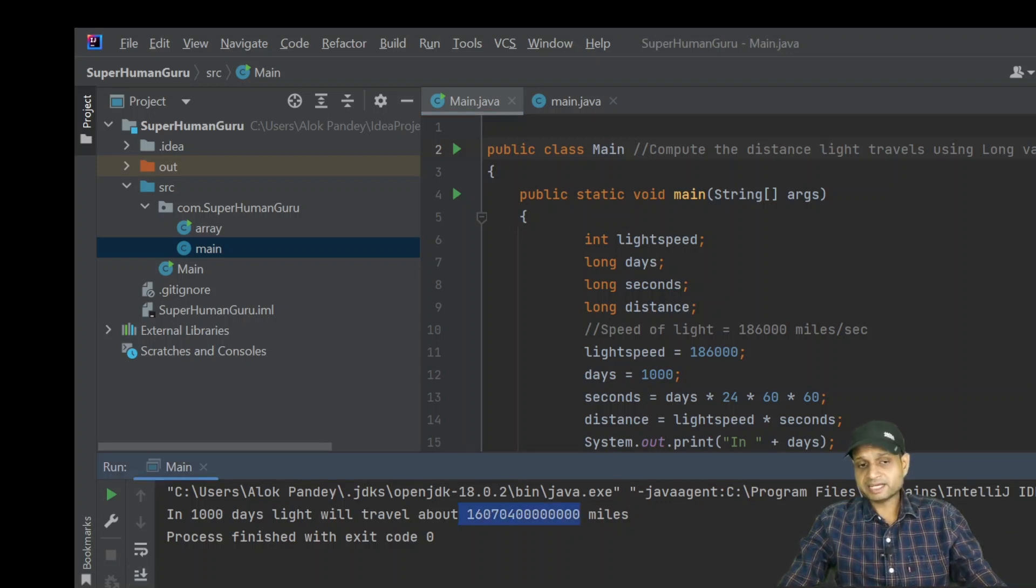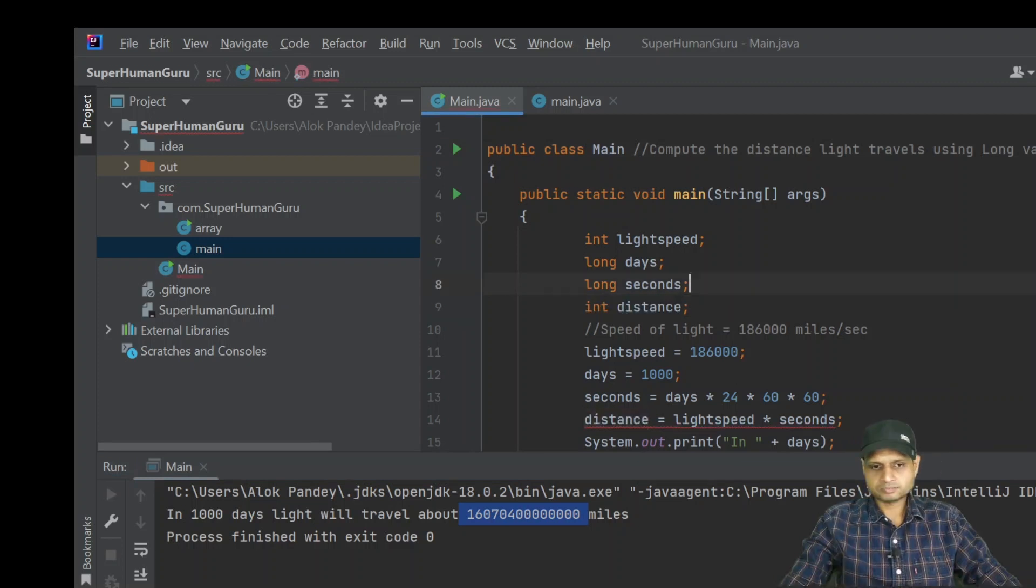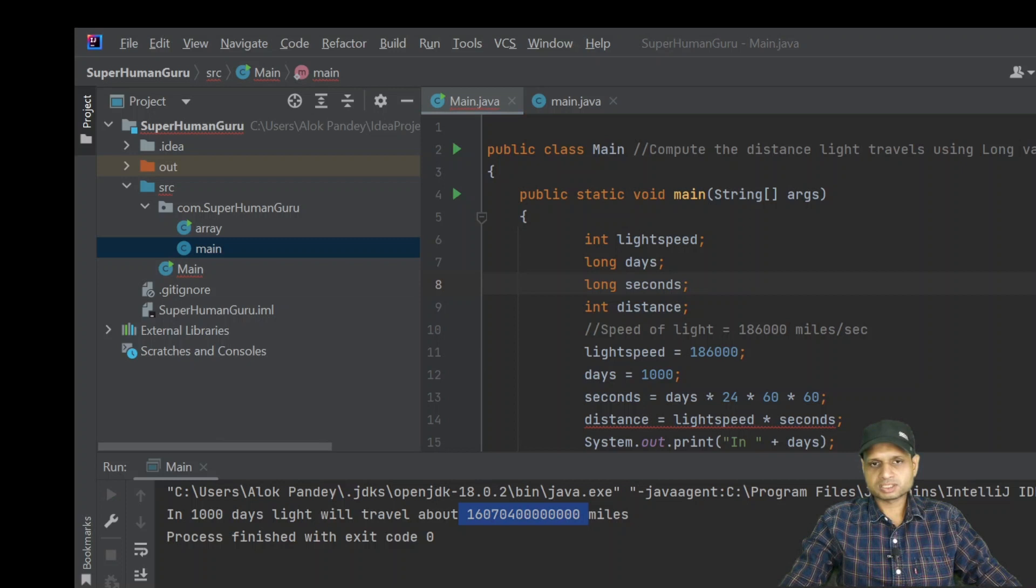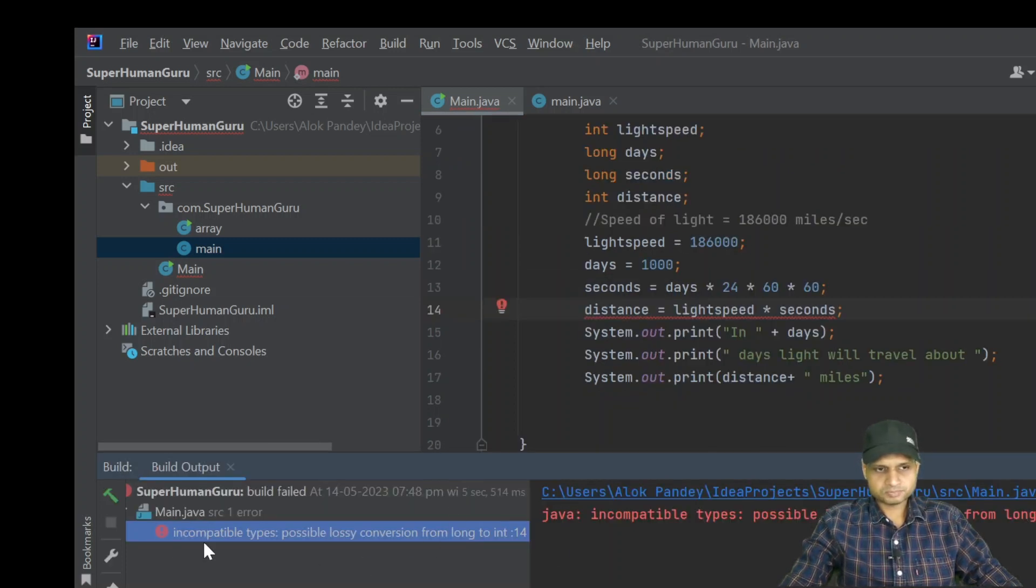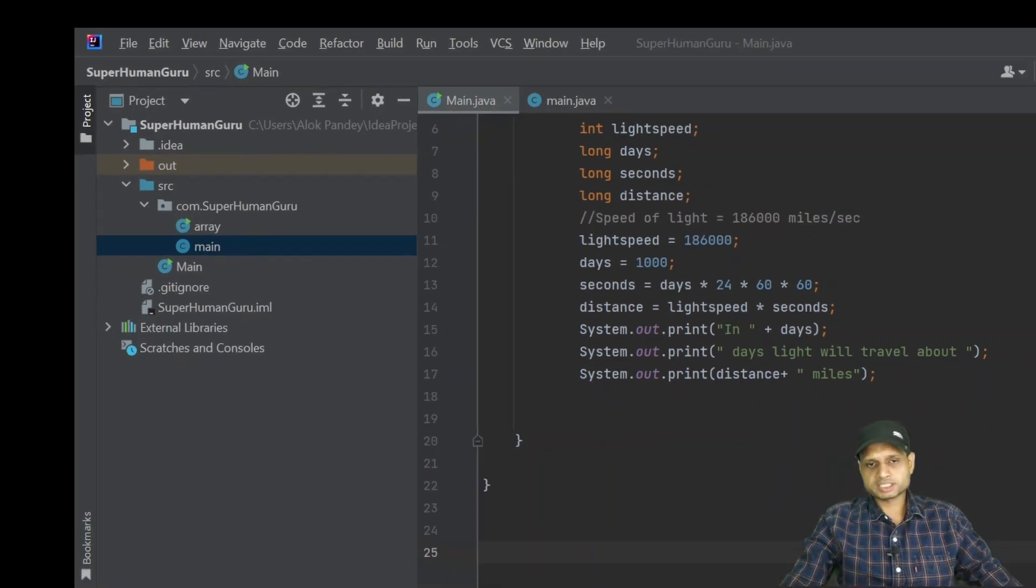You can see that this is the value. This value we cannot store in a variable that we have defined as an int. In case we define it as an int, we will get an error. If we define distance as an int, we will get an error. Let's check the error. We execute this program, you can see the error. So we change it back to long. I hope the complete concept of integer type variables is clear to you.